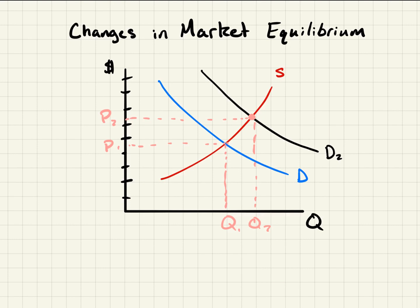As people's tastes and preferences increase towards a good or service, more people are going to be willing to pay a higher price and more people are going to buy that good or service. Please note this change in demand — because the whole curve shifted — caused a change in quantity supplied. So this change is not a change in supply. There's a change in quantity supplied from Q1 to Q2, but there's not a change in supply. There's a change in demand.